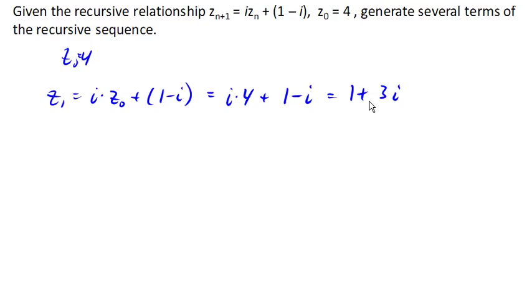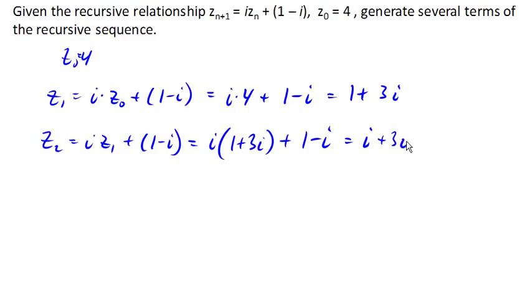z_2 then would be i times z_1 plus 1 minus i, which would be i times, well, what was z_1? z_1 was 1 plus 3i. So we'll distribute here. i times 1 is i, i times 3i is 3i squared. And remember, i squared is negative 1, so we'd end up with negative 1 times 3, or negative 3. And we can add those together. Negative 3 plus 1 is negative 2, i and negative i is 0. And so this term ends up being real. It ends up being negative 2.